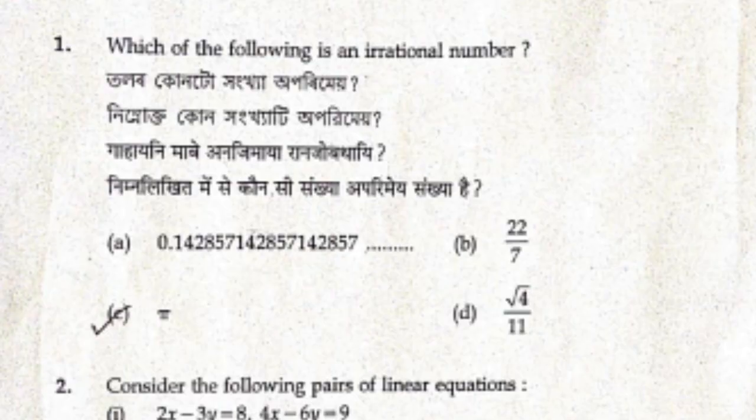The first question is: Which of the following is an irrational number? Option A is 0.1428, B is 22 by 7, C is √5, D is 4 by 11. A, B, and D are rational numbers. C is √5, so the right answer is C.